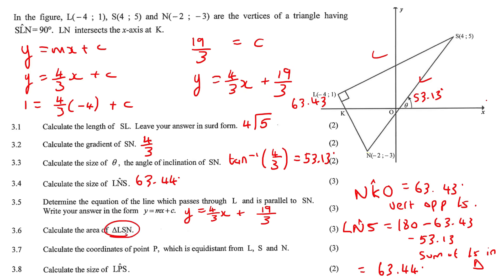Calculate the area of triangle L, S, N. So triangle L, S, N. Oh, it's the whole thing. Okay, so they want the area of that entire triangle. So there's different ways to get area. Let's try to use what we already have. So we already have the length of SL, okay? So that means if we could simply get the length of this one, then we can just use the half base times height because it's got the 90 degree. So let's go get the length of L, N.